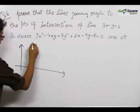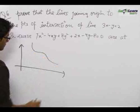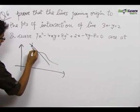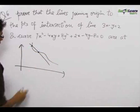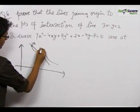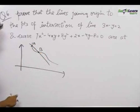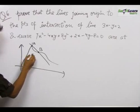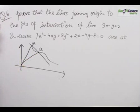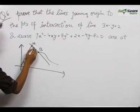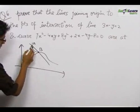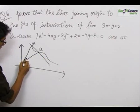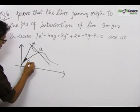The question says that there is a curve and there is a straight line which is cutting this curve at two points, let us say A and B. The two lines joining the origin to the points of intersection of this line and the curve — we want to prove that these two lines are at 90 degrees.